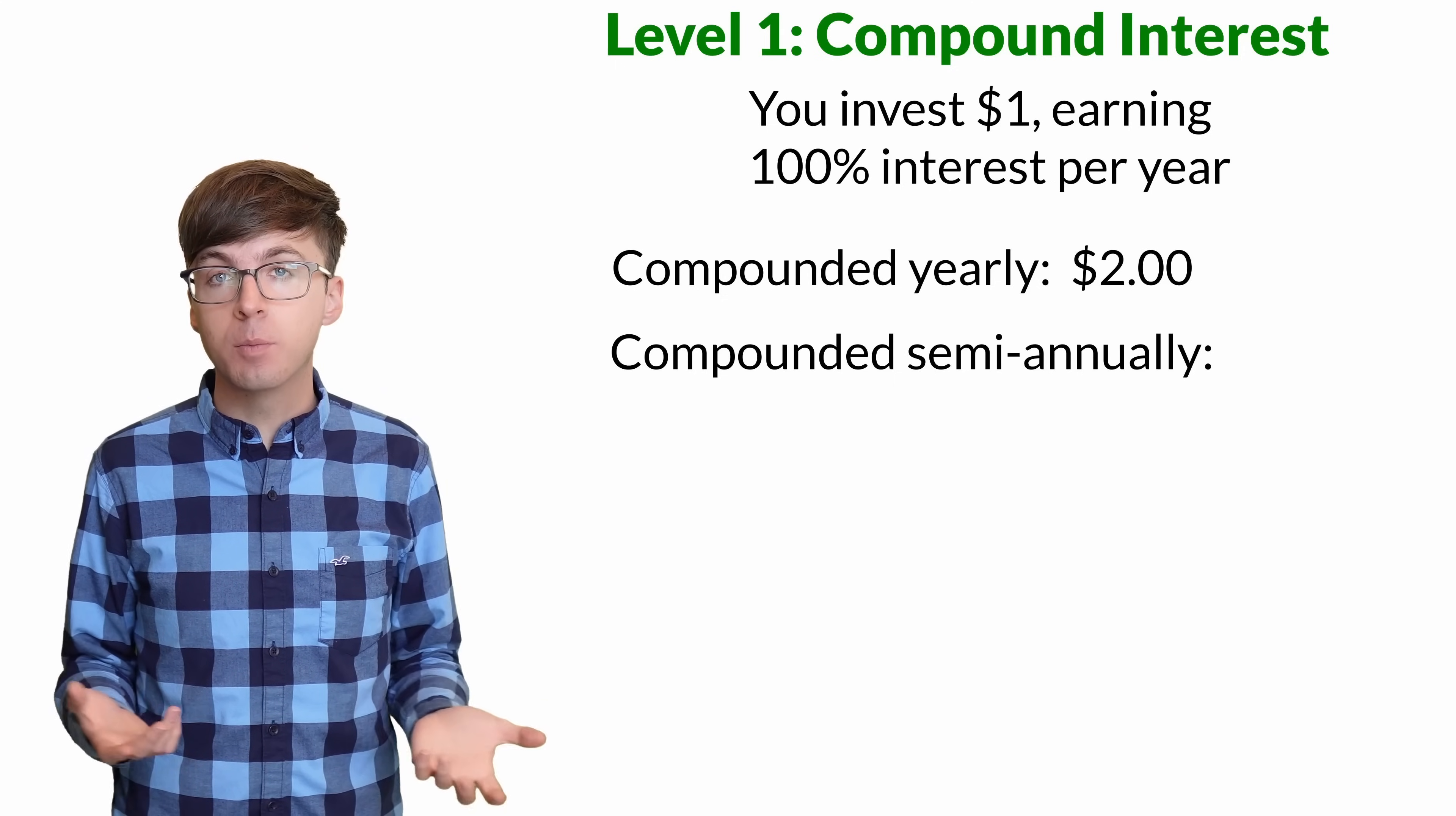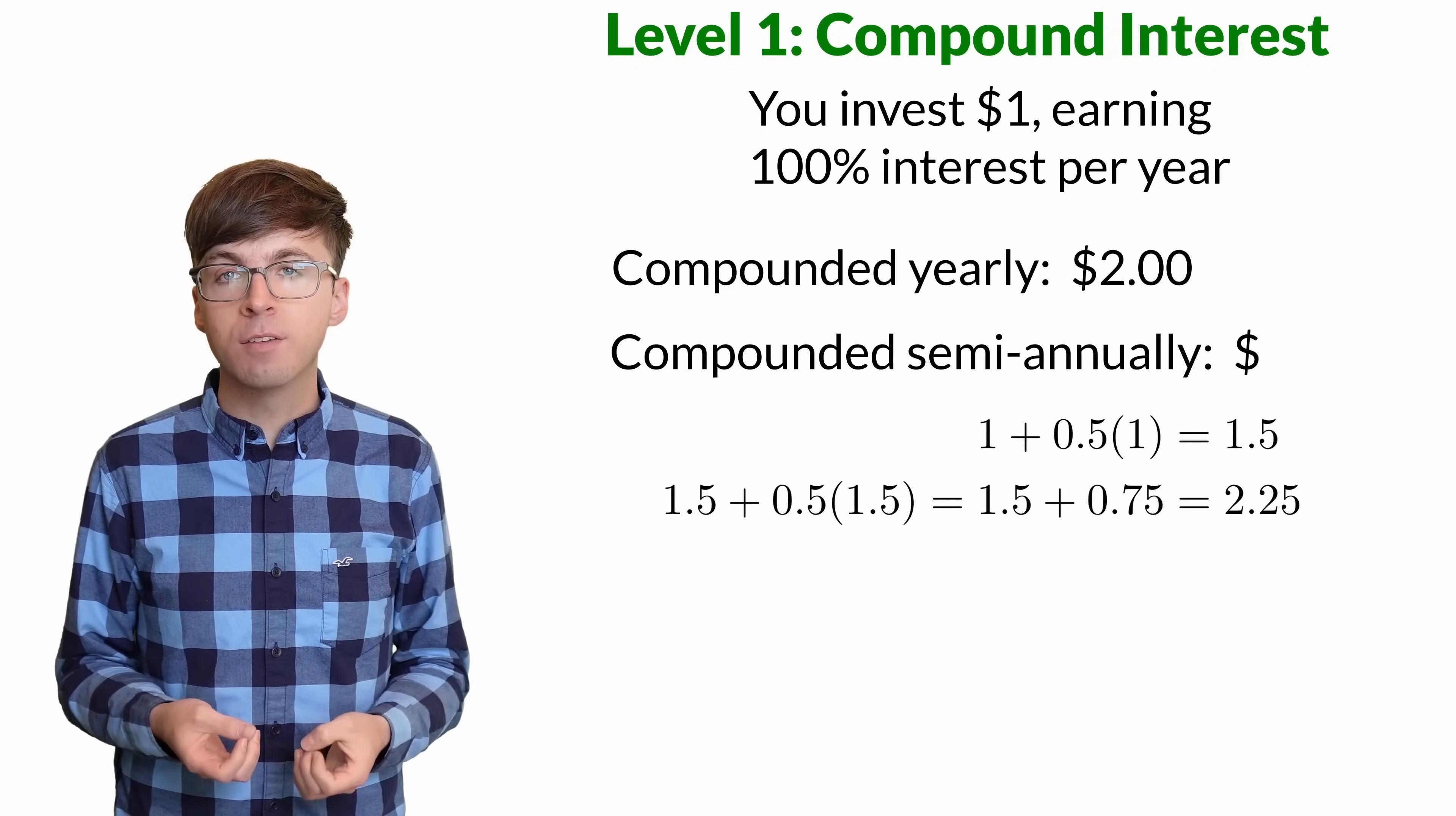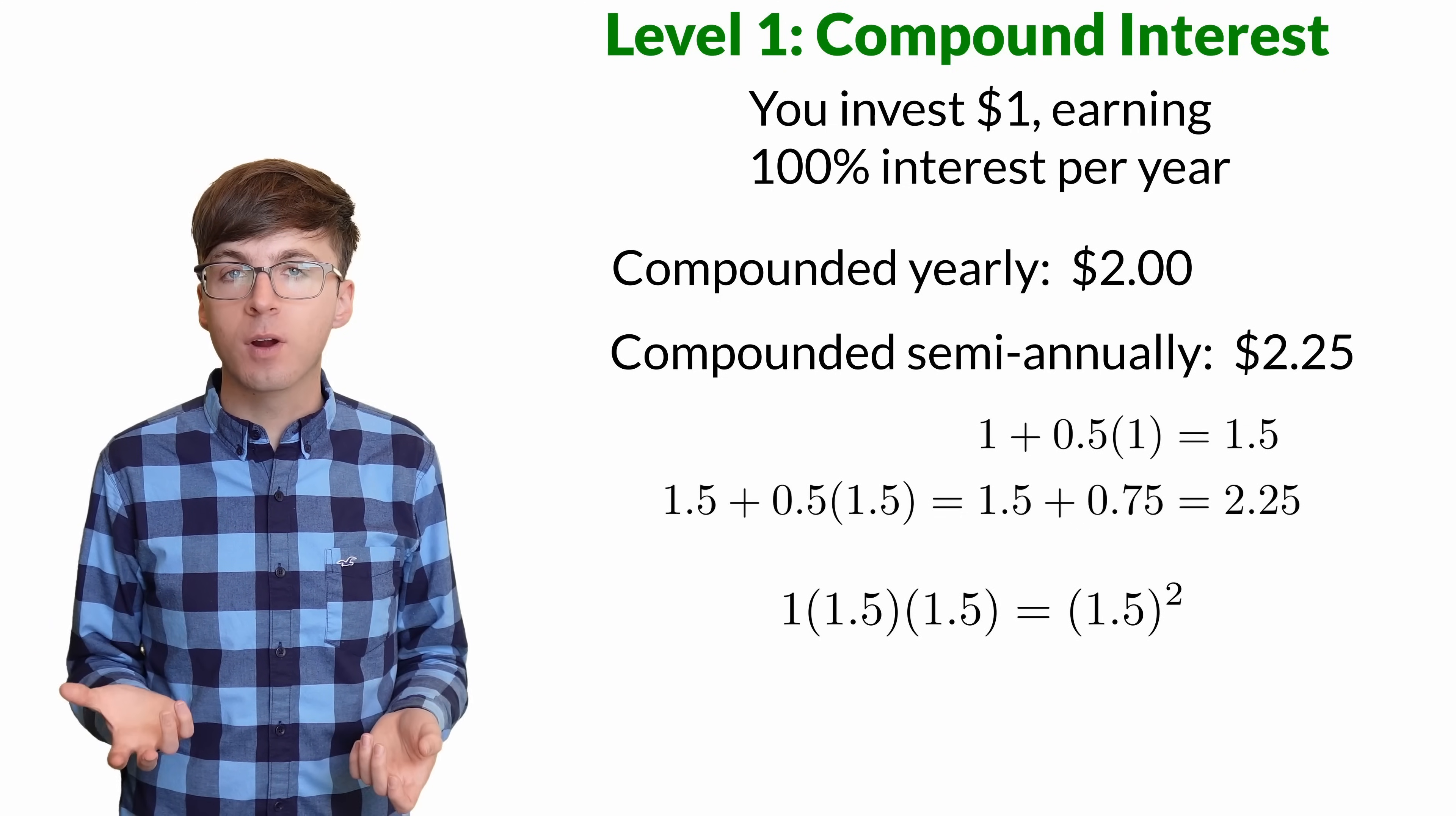For a six month period, you'll get half as much interest, 50%. So after six months, you get paid 50 cents, bringing your balance to a dollar 50. Then in the next six months, you gain 50% of this amount, which is 75 cents. So your total at the end of the year is $2.25. You get an extra 25 cents, 50% of the 50 cents of interest paid in the first period. We can write this as $1 times 1.5 times 1.5, or $1 times 1.5 squared.